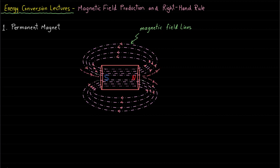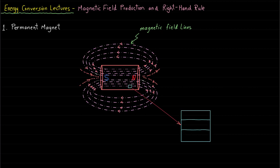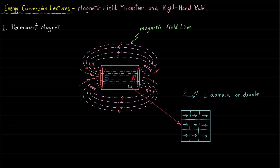If we take a portion of this permanent magnet and zoom in, we can find that the permanent magnet consists of tiny magnets called dipoles or domains. What's interesting is that these domains or dipoles of the permanent magnet are all arranged in one direction.